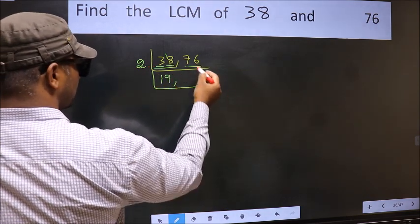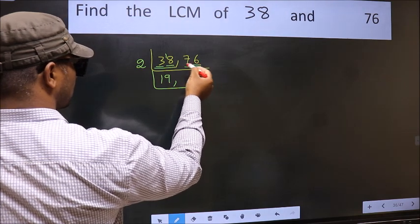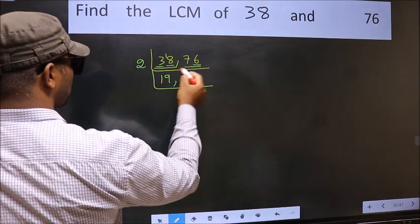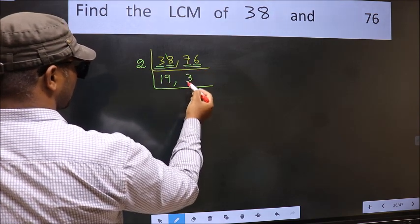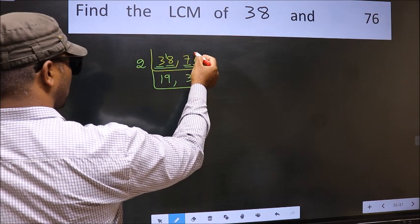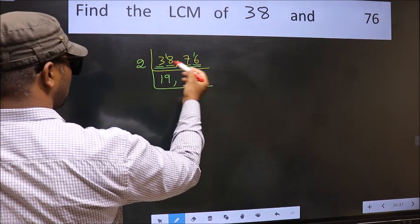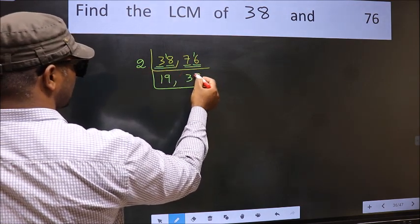The other number 76. Last digit 6, E1. So this is divisible by 2. First number 7. A number close to 7 in 2 table is 2, 3, 6. 7 minus 6, 1, 1. Carried forward 16. When do we get 16 in 2 table? 2, 8, 16.